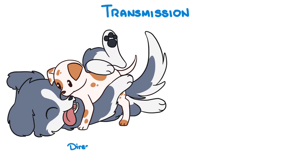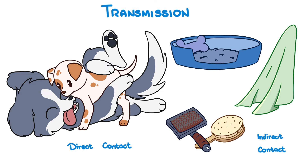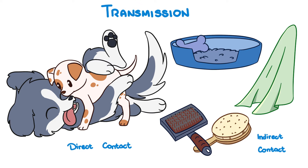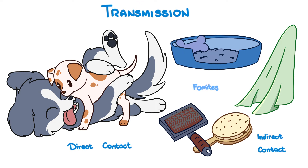Transmission is primarily through direct contact with infected individuals, or indirectly through fomites. Fomites are any object or item that is contaminated with the infectious agent, like beddings, blankets, or grooming supplies for example.